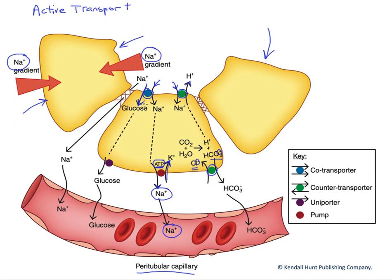Last but not least, the glucose taken up into this cell is not fully reabsorbed yet, so it has to exit at the basolateral membrane. In this case we utilize a uniporter — this is not active transport. Glucose binds to this transporter and is transported out of the cell into the interstitium, moving down its gradient. It was concentrated inside the cell by the co-transporter at the apical membrane, so this is called facilitated diffusion, utilizing the gradient of high glucose inside to low outside, with the transporter facilitating that diffusion and aiding its reabsorption.